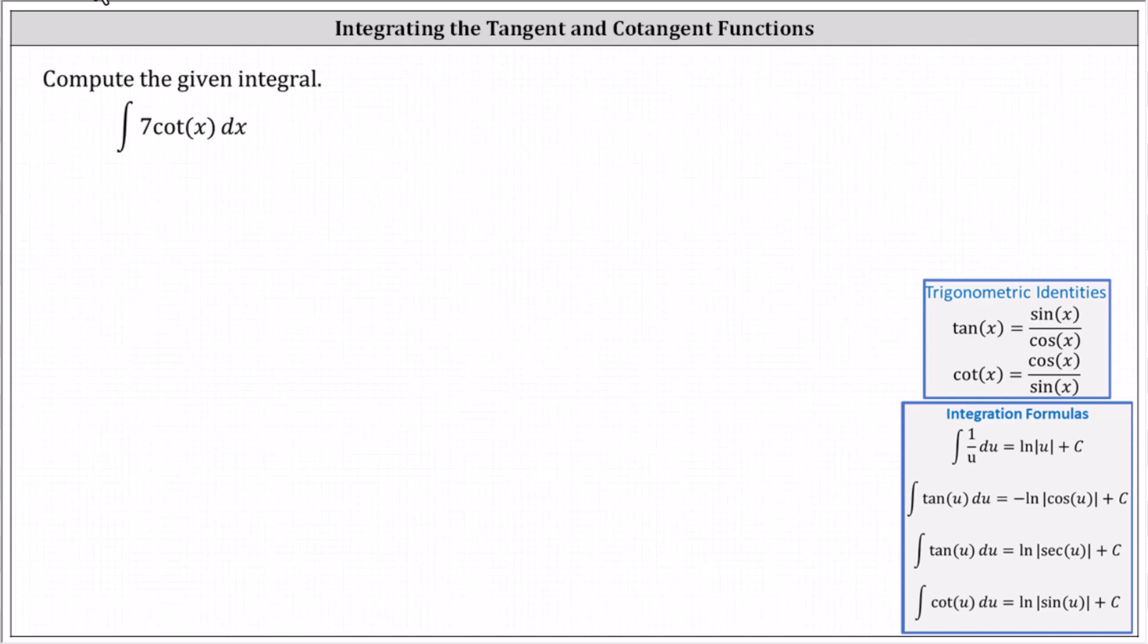Looking at the integration formulas below, we have the formula of the integral of cotangent u du equals natural log absolute value of sine u plus c.